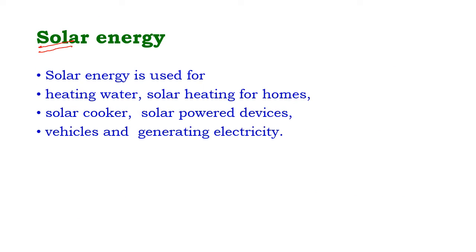Solar energy is used for heating water and solar heating for homes. In cold regions and hilly areas, solar heating systems are set up in homes to produce a warm atmosphere inside. Solar cookers are useful for cooking purposes. Solar-powered devices and solar-powered vehicles are increasingly becoming popular in our country, and solar energy is also used to generate electricity.